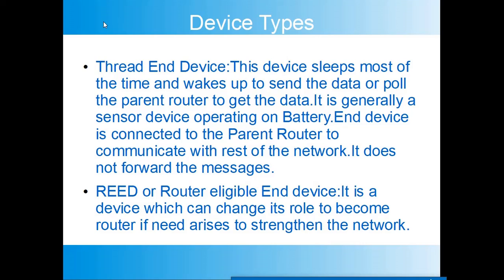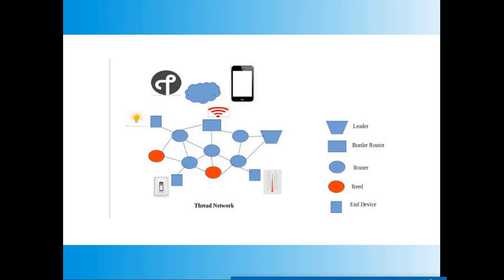The end device is always connected to the parent router, through which it communicates with the rest of the network — it does not forward messages. The Router Eligible End Device (REED) is a device which can change its role as per need. If there is a need for a router in the network, this device can change its role to router and provide a reliable network. If there is redundancy of routers, this device can downgrade itself to the end device role.